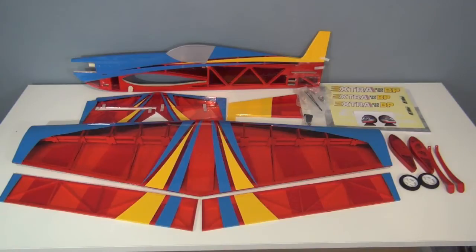You get the hardware for the servo linkages, motor mount, wheels, landing gear, wheel pants, and a few decals, which include that really cool profile pilot figure there. I think that's a nice little touch by eFlight to include that so you can actually have a pilot in this airplane. So let's go ahead and look at the electronics that I'm going to use for this aircraft.